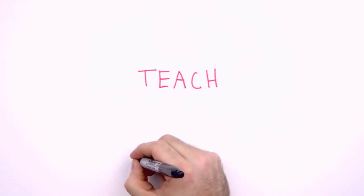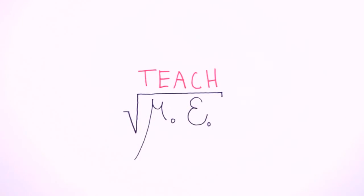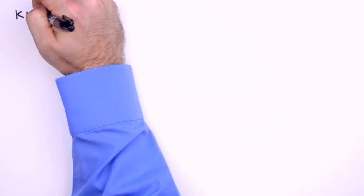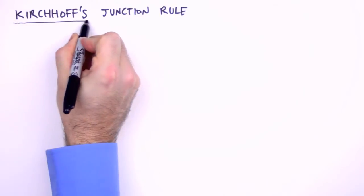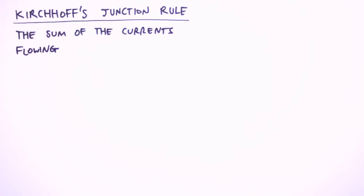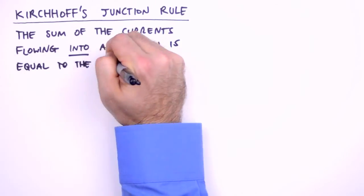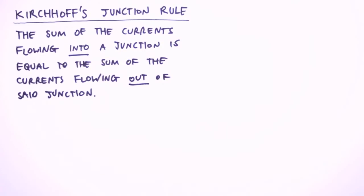I'm Jesse Mason, and in this episode of the Teach Me series, we'll learn the basics of Kirchhoff's rules and see how they're applied to circuits. Kirchhoff's rules, sometimes referred to as Kirchhoff's circuit laws, are a pair of rules used typically to analyze DC circuits. The first rule we'll examine is Kirchhoff's junction rule, which states that the sum of the currents flowing into a junction is equal to the sum of the currents flowing out of that junction. Mathematically: current in equals current out.